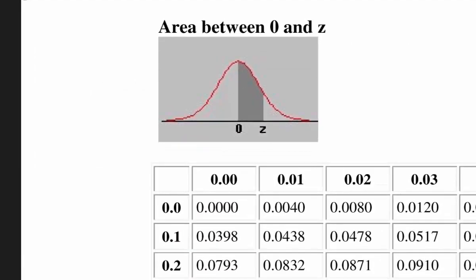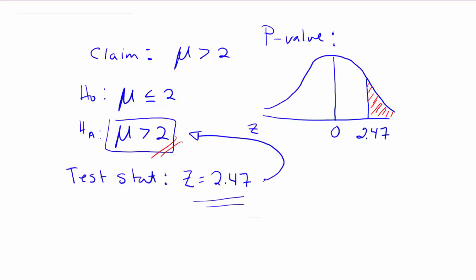Don't forget when you're looking at this table, what that's giving us is the area from the z-score we're looking at to the center of 0. So it's this area that we're getting, we're not getting the tail area that we want, we're getting the area from here to 0. So that means what we found is this number, 0.4932.